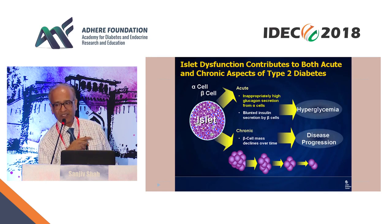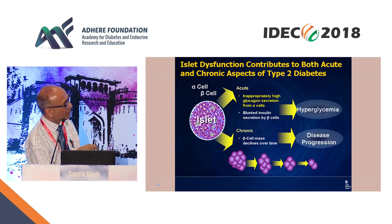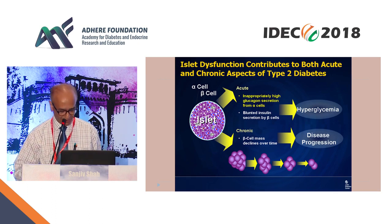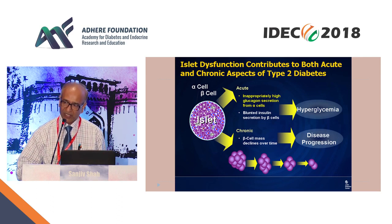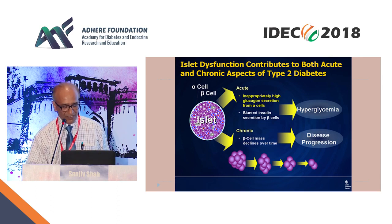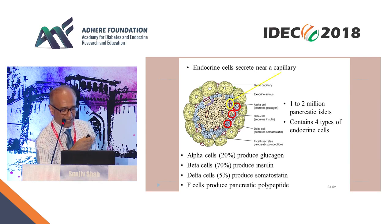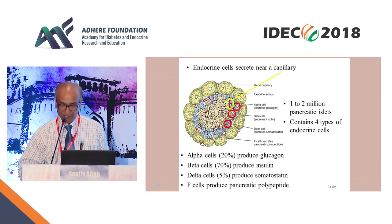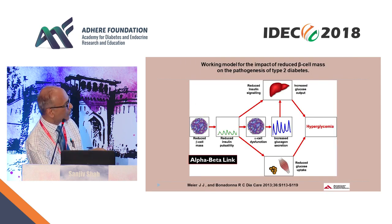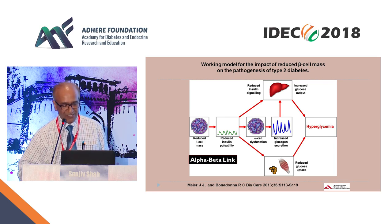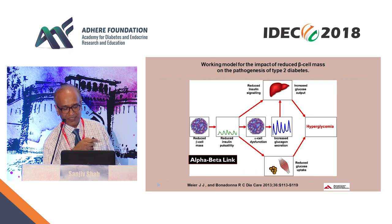Looking at the second aspect of the pancreas — not only the beta cell but the alpha cell — type 2 diabetics have inappropriately high glucagon secretion for that level of glucose. Not only is beta cell mass low with low insulin, but there is excess glucagon secretion. Almost 20% of cells in the islets produce glucagon, while beta cells are 70%. Reduced beta cell mass or pulsatility results in alpha cell dysfunction: if there is low insulin sensing by alpha cells, there will be excess glucagon secretion.